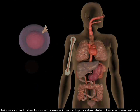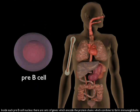Inside each pre-B cell nucleus, there are sets of genes which encode the protein chains which combine to form immunoglobulin.